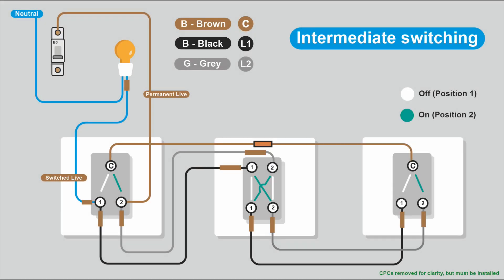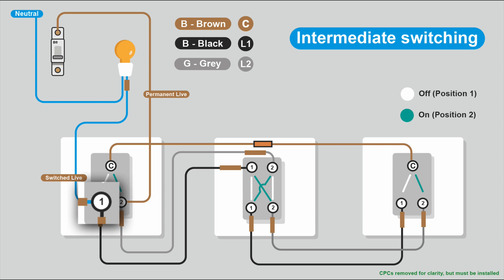This is how we connect power to intermediate switching. The power comes in to connection two and the switch live comes out of the switch and up to the ceiling rose and the light on connection one. So we have a permanent live and a switch live, and we need to connect our strappers.